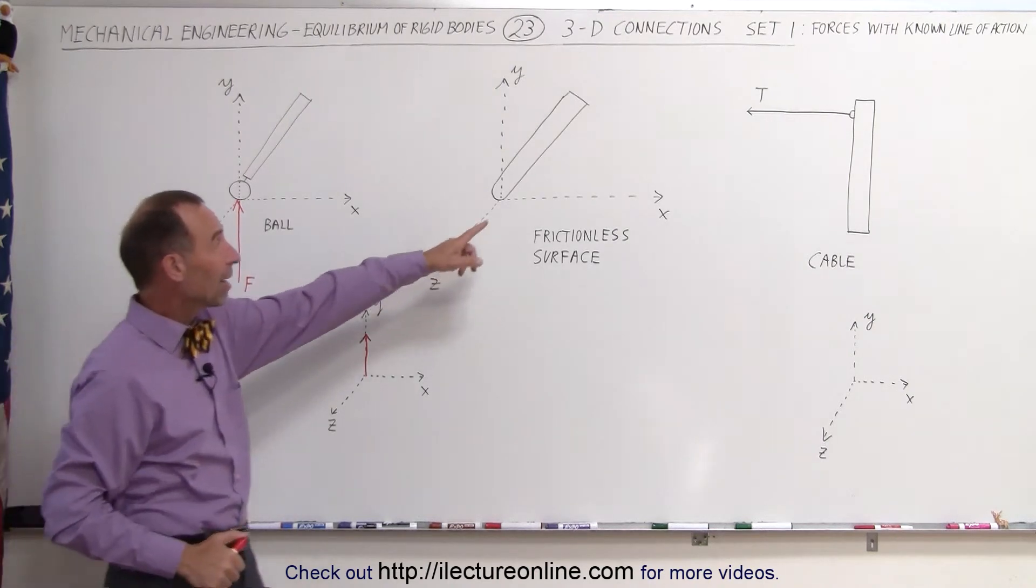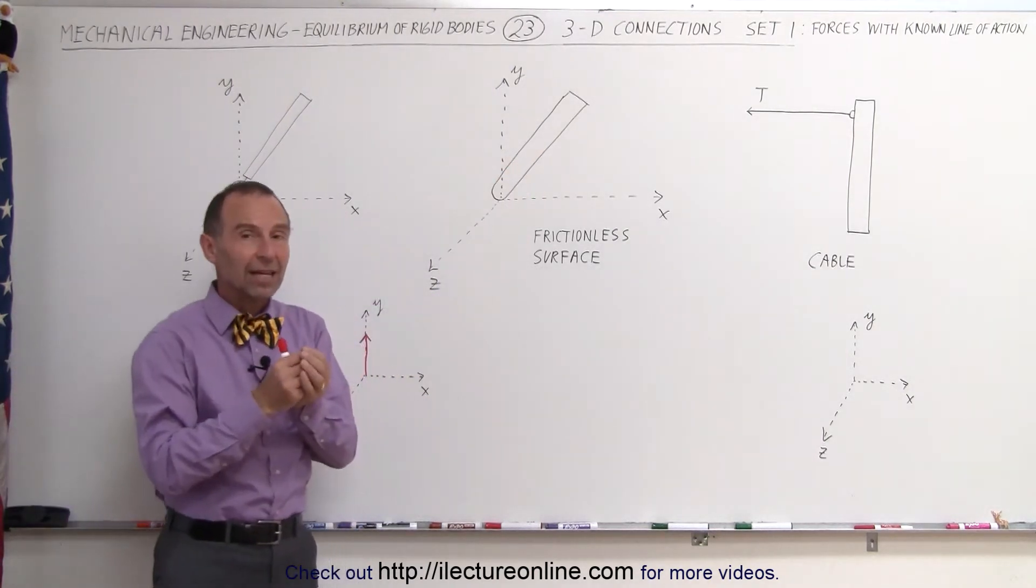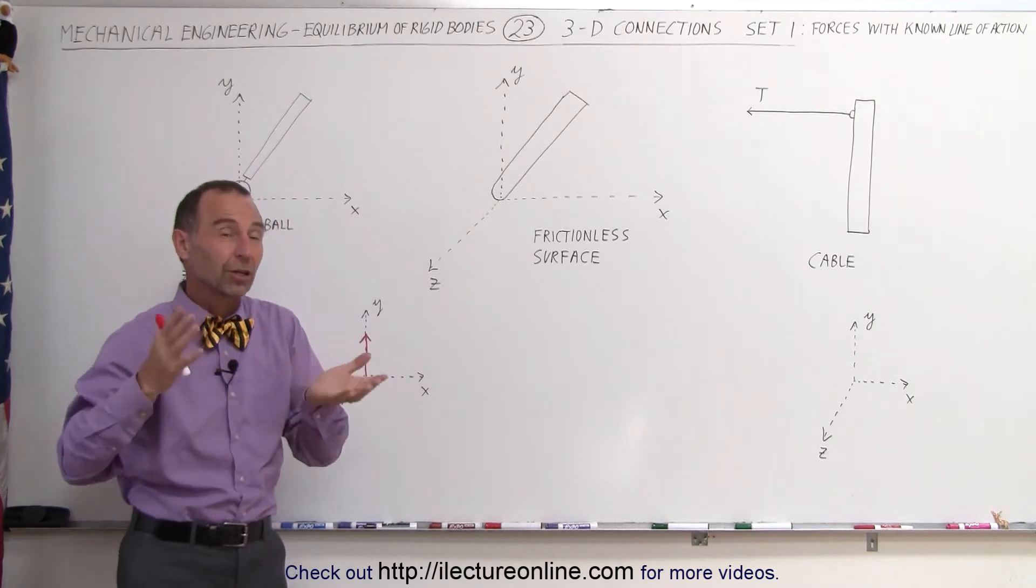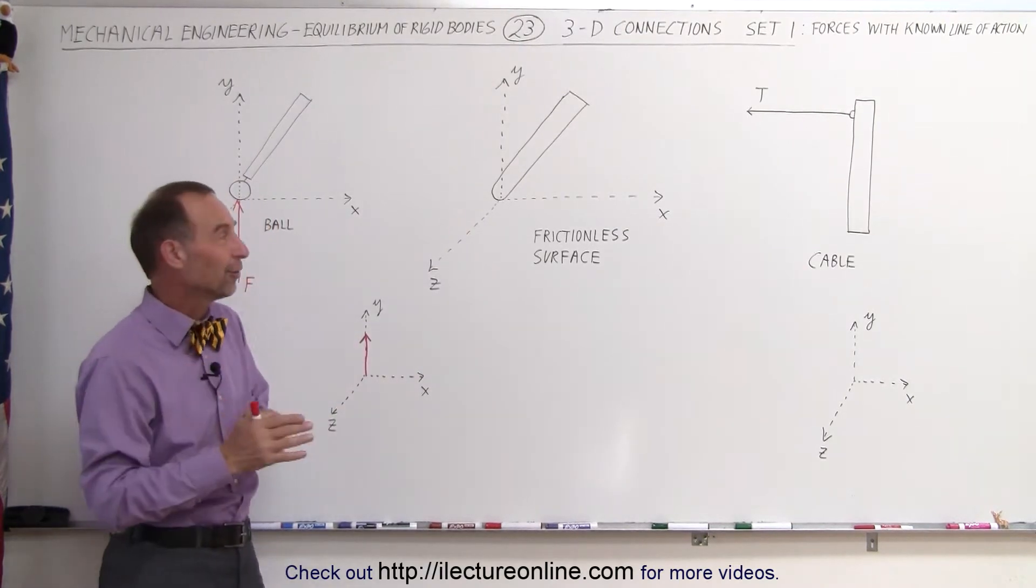If we have a case like this where we have an object that has a smooth surface and it's resting on a floor that has a smooth surface, therefore we can ignore the friction - in other words, a frictionless surface.